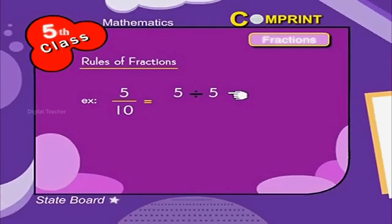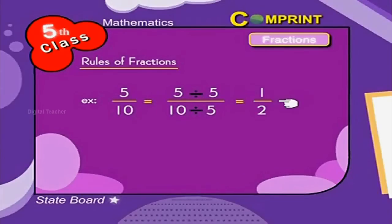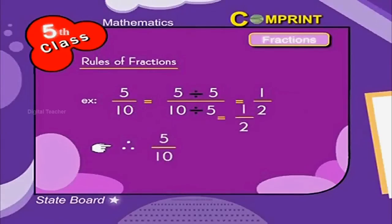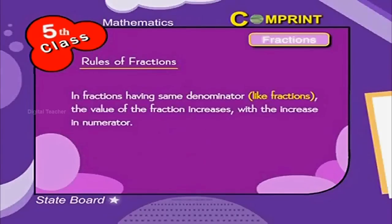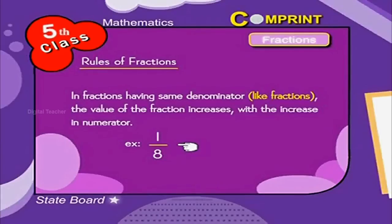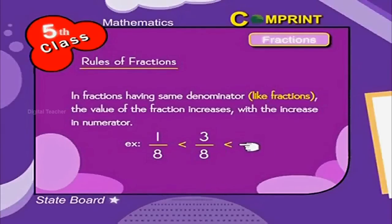Therefore 5 by 10 is equal to 1 by 2. In fractions having the same denominator, the value of the fraction increases with the increase in numerator. For example, 1 by 8 is less than 3 by 8, less than 5 by 8, and so on.